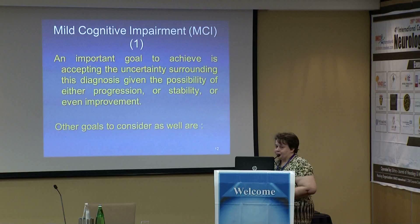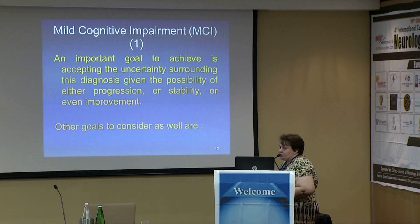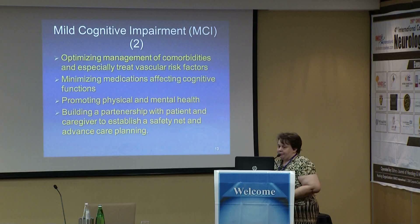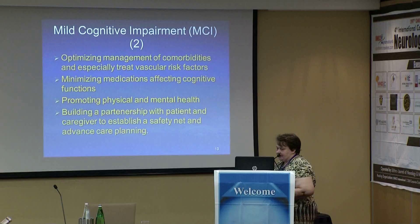Secondly, mild cognitive impairment or MCI: the battery of tests begins to be altered but autonomy is safe. An important goal is accepting the uncertainty surrounding this diagnosis, given the possibility of either progression, stability, or even improvement. Other goals include optimizing management of comorbidities, especially treating vascular risk factors, minimizing medications affecting cognitive functions, promoting physical and mental health, and building a partnership with patient and caregiver to establish a safety net and advanced care planning.